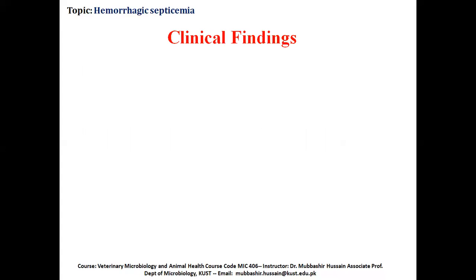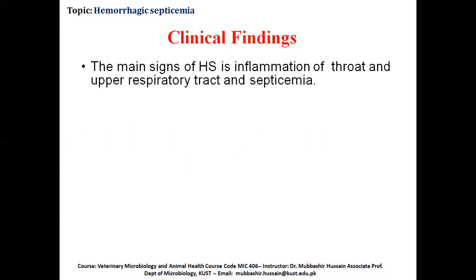Clinical findings: the main sign of HS is inflammation of the throat and upper respiratory tract. Septicemia occurs when bacteria enters the blood and produces toxins; the presence of bacteria plus toxin production results in septicemia, which is very dangerous and most of the time results in death of the animal.